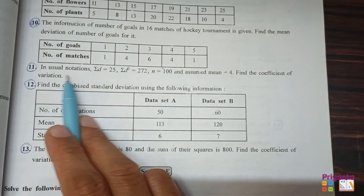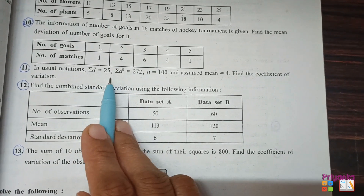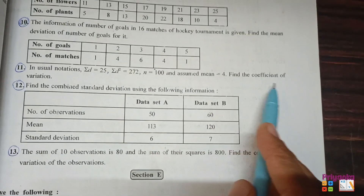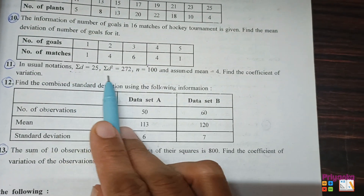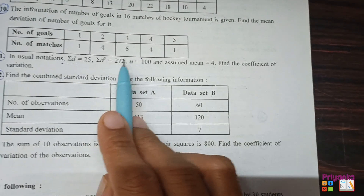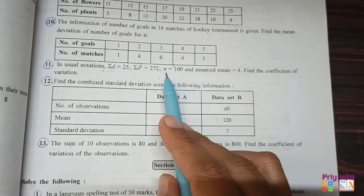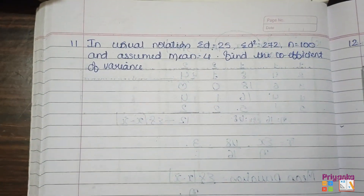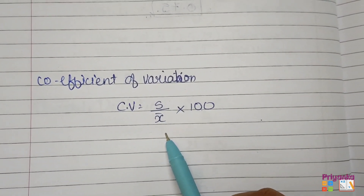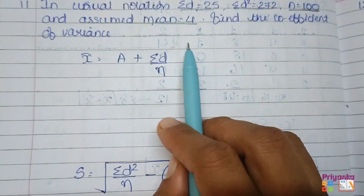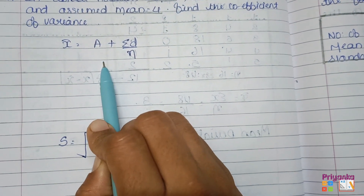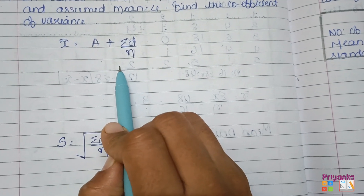Question number 11: in usual notation, sigma d equals 25, sigma d-squared equals 272, n equals 100, and assumed mean equals 4. Find the coefficient of variation. The information given uses the shortcut formula from the textbook. The formula for coefficient of variation is standard deviation divided by mean, multiplied by 100. We use the sigma d, sigma d-squared, n, and assumed mean — this formula was introduced in the last chapter.